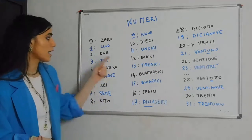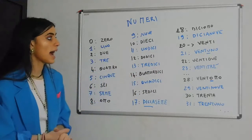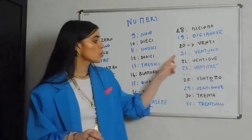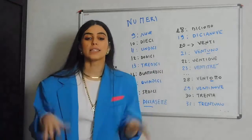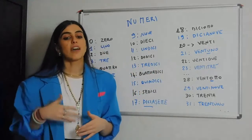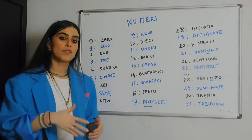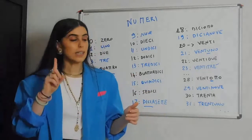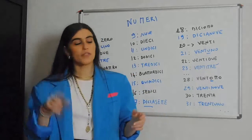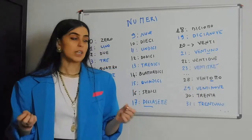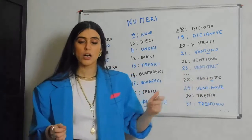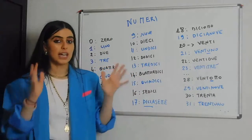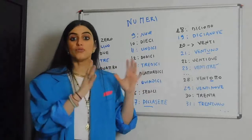Now that we are at 20, from 20 onwards we just pick the first ten numbers again. There is a contraction only when there are vowels — vowels occur only for 'uno' and 'otto'. So instead of saying 'venti uno' we drop the final vowel of 'venti' and attach 'uno'. The same applies for 'ventotto' — we don't say 'venti otto', just 'ventotto'.